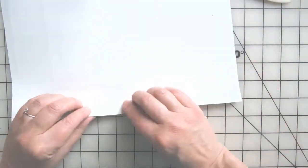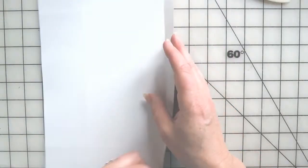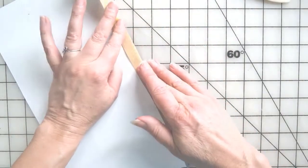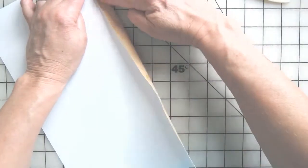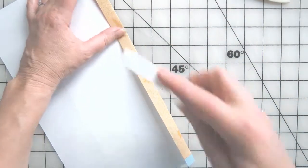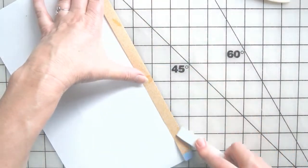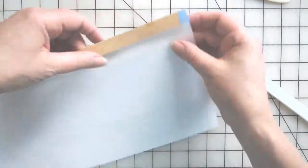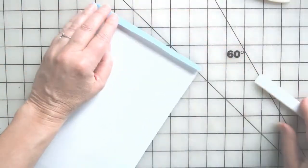You just fold that on that scored edge and then press it down, and do that on all three sides.